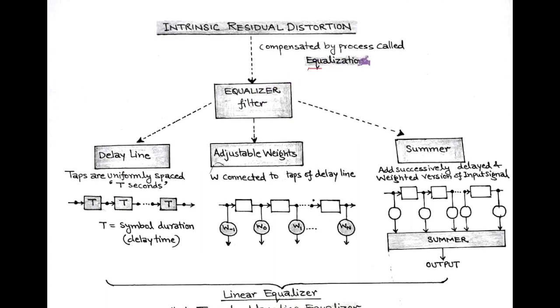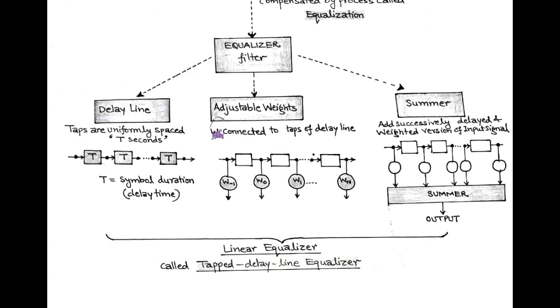For the equalization process, an equalizer filter is used having delay line, adjustable weights, and summer as building blocks. Here the delay line consists of taps that are uniformly spaced at every T seconds, that is called symbol duration. Here T is called delay time. At every tap of the delay line, there is a connection of adjustable weights denoted by W. At last, the delayed and weighted version of input signal is added successfully using summer at the output side of the equalizer. The combination of delay line, adjustable weight, and summer is called the linear equalizer or simply called tapped delay line equalizer.